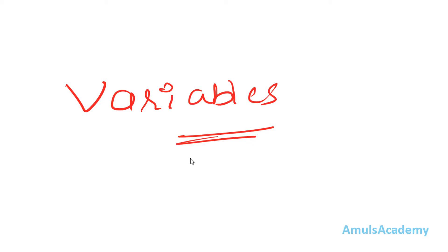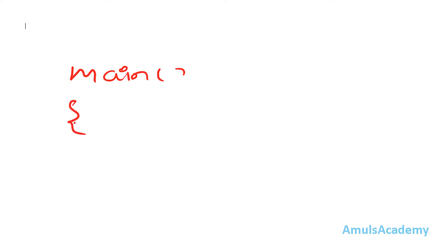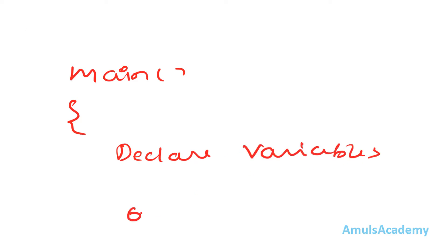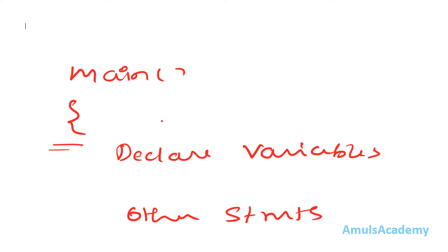Today in this tutorial we are discussing about variable declaration. If you are using any variables in your program, first you need to declare them. You need to declare the variables at the beginning of the function. If you are using variables inside the main function, then you need to declare them at the beginning of the main function, right after the opening curly brace. After that you can write other statements.